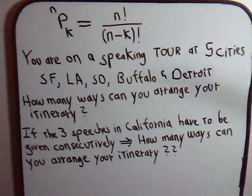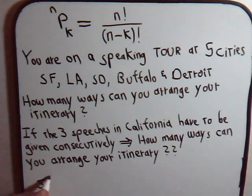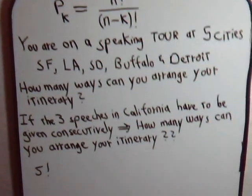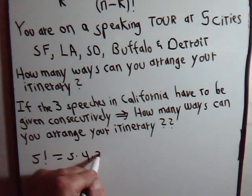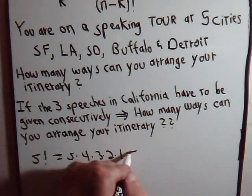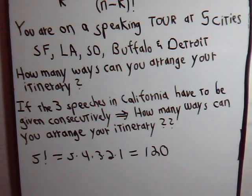Let's go to the first part of the problem. Here we have five different cities, so how many different ways can you arrange trips to the five different cities? Clearly, that's just going to be five factorial — that's 120 different ways that we could visit these five different cities.